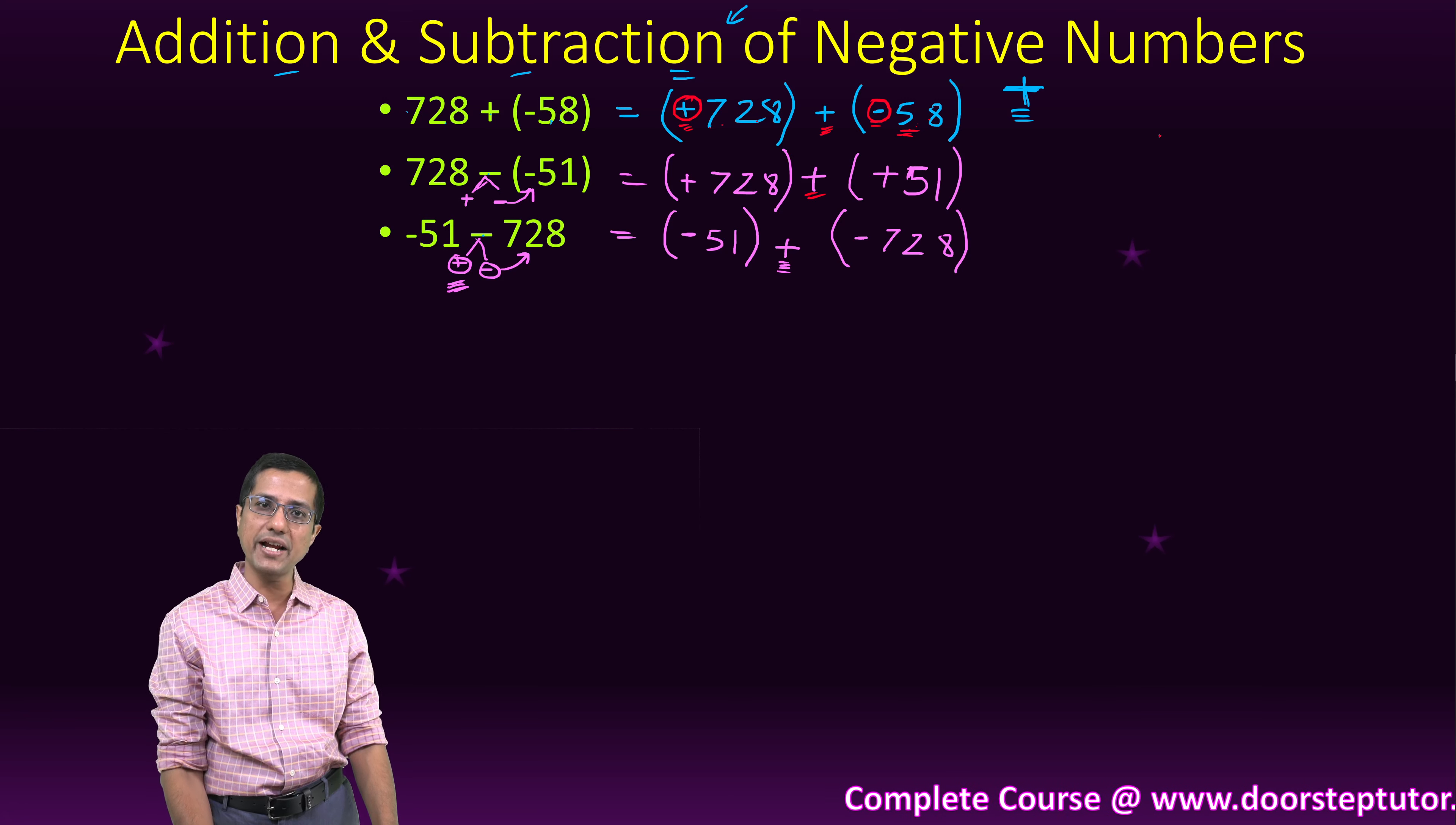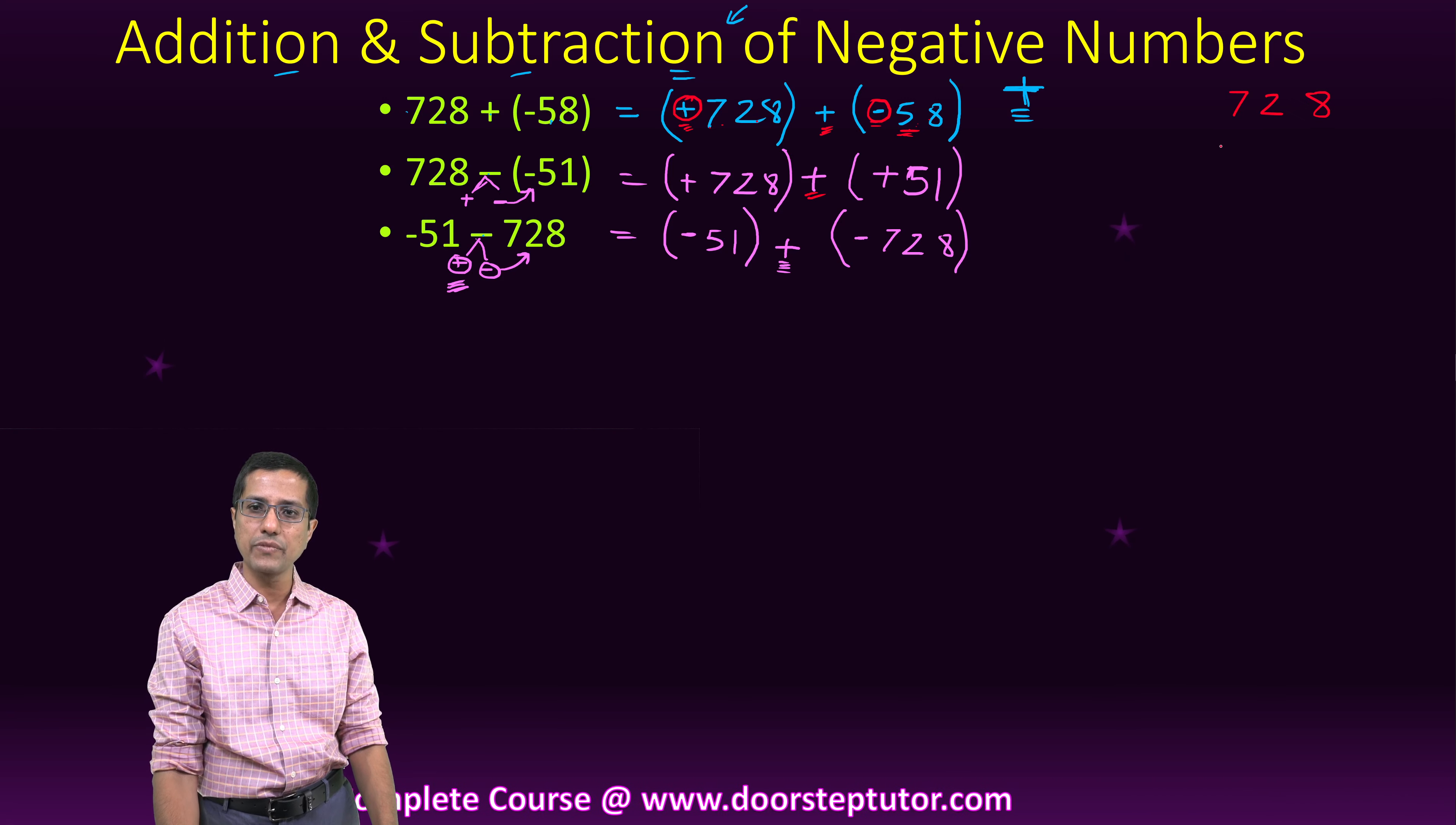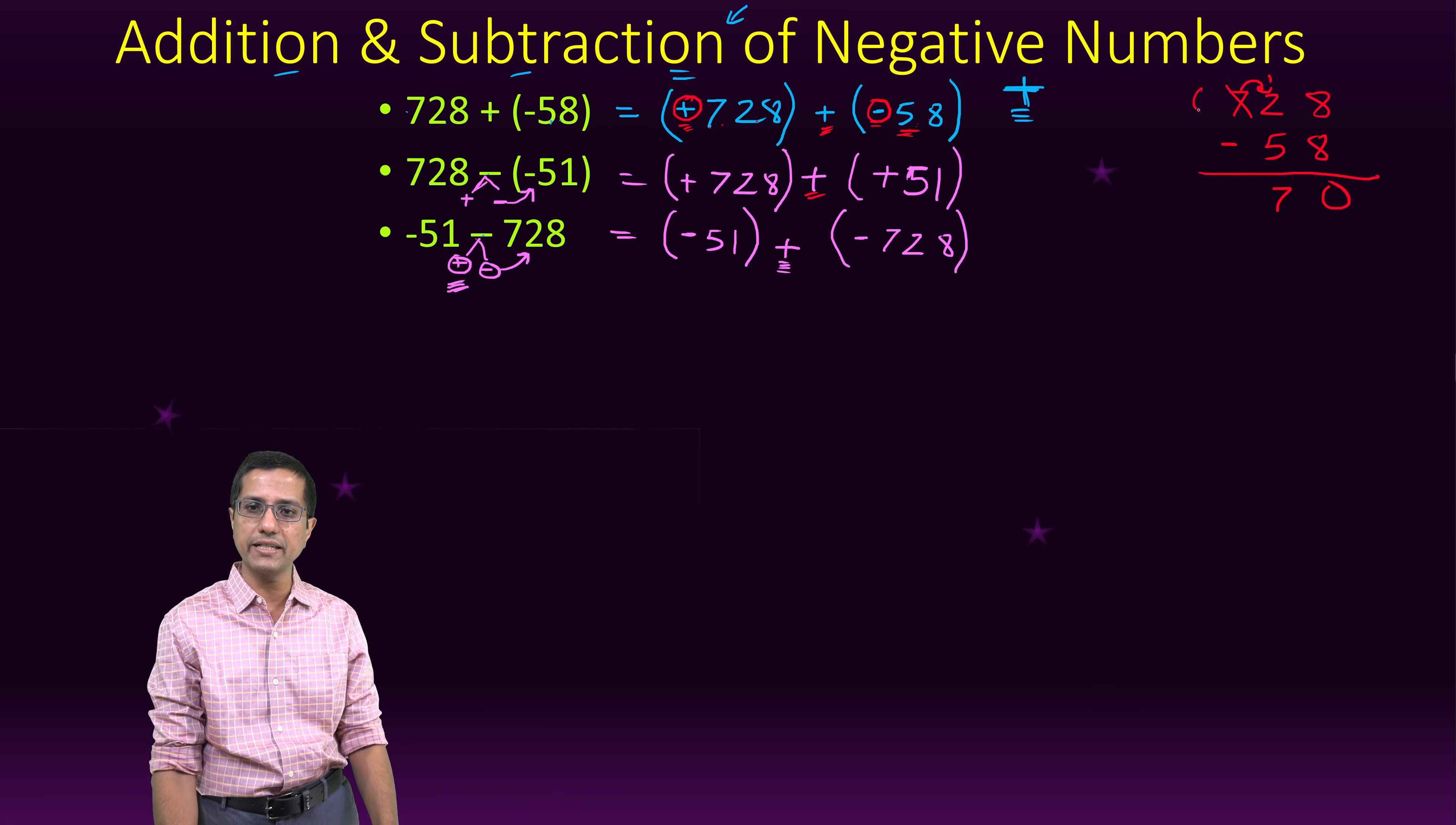then we will do the subtraction. So what do we do? We do subtraction of these operands, minus 58. So we do the subtraction. This becomes this. And then this is a borrow. So this becomes 12, this becomes 7, and this is 6. So 670.